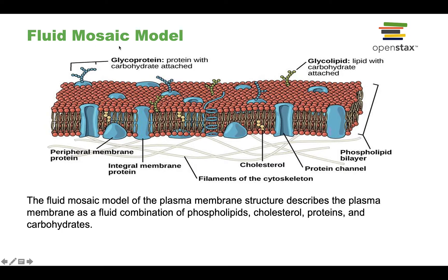The 'mosaic' section of the fluid mosaic model refers to the fact that the plasma membrane isn't only made up of one thing — it is made up of many things. There are other lipids, carbohydrates, and proteins. So the fluid mosaic model says the plasma membrane is fluid, with a lot of movement in it, and it's mosaic — made up of many different parts.